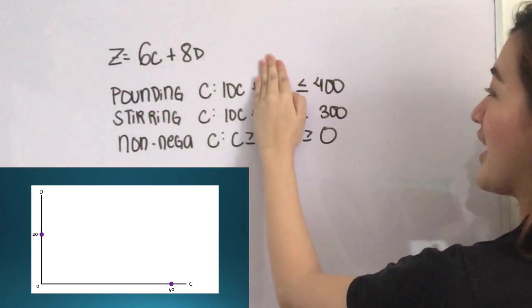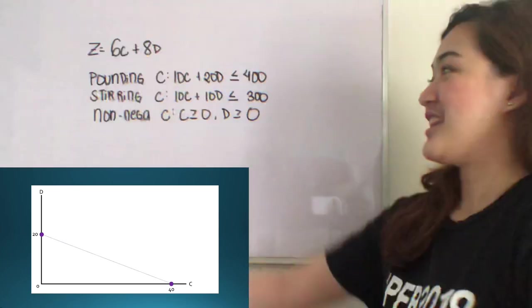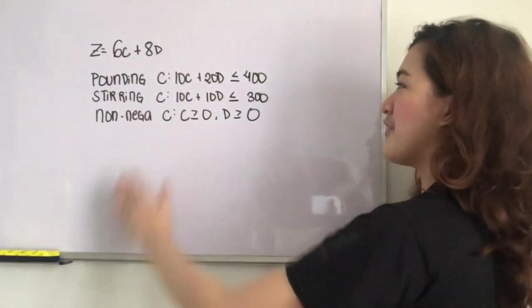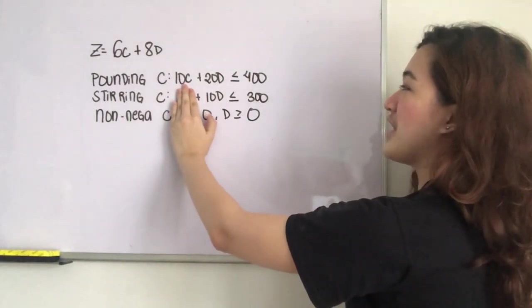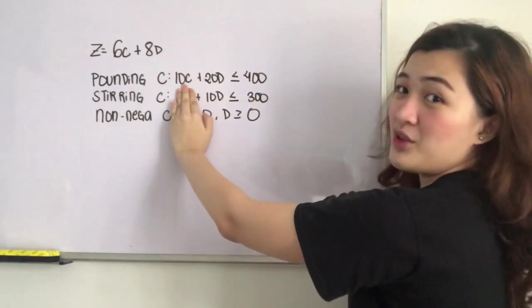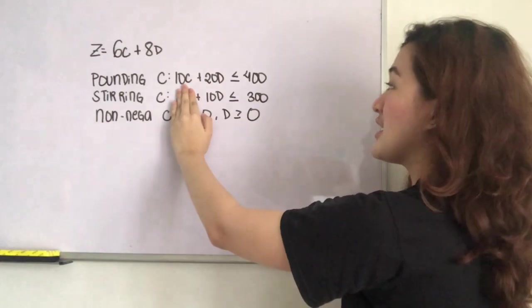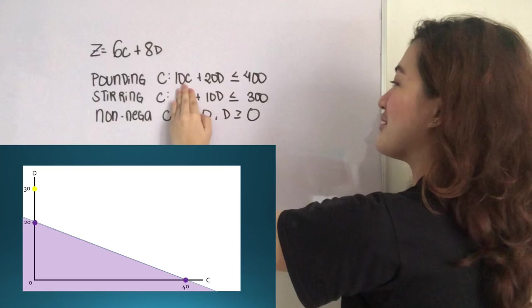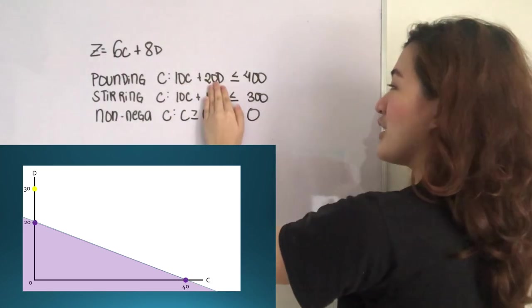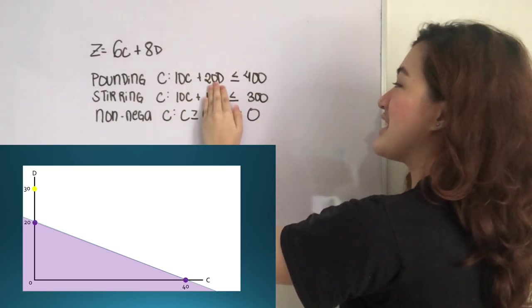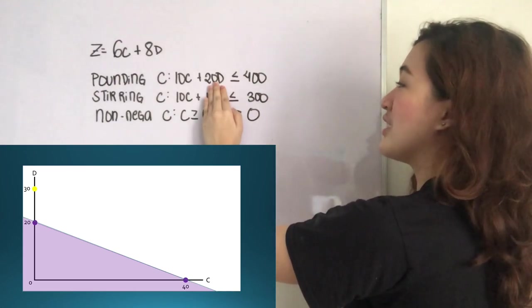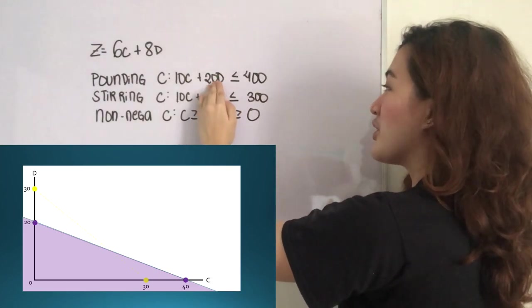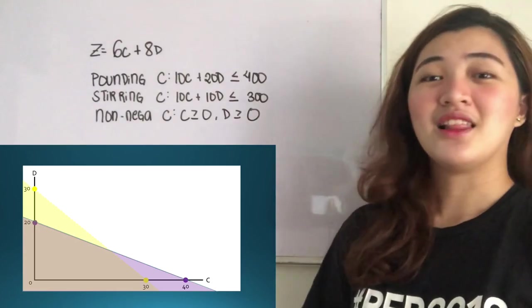Next, for stirring, if we cover 10C, we will have 10D is less than or equal to 300, which will give us D is less than or equal to 30. Then if we cover the D, we will have 10C is less than or equal to 300, which will give us C is less than or equal to 30. That's for stirring.